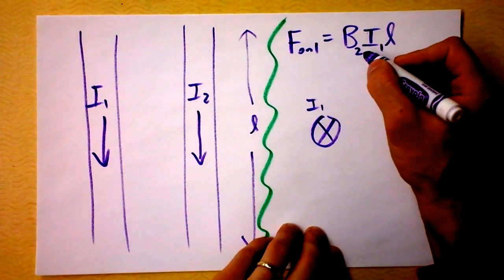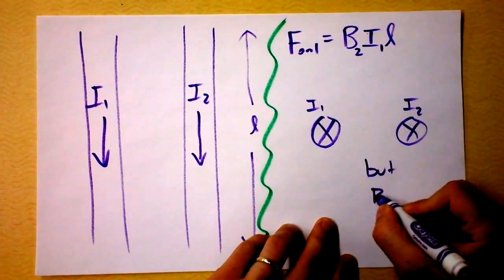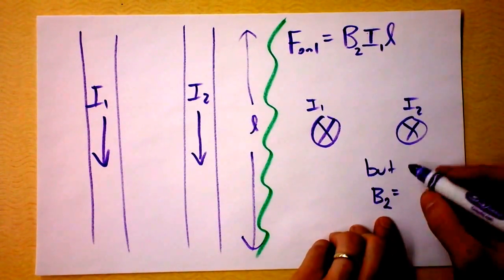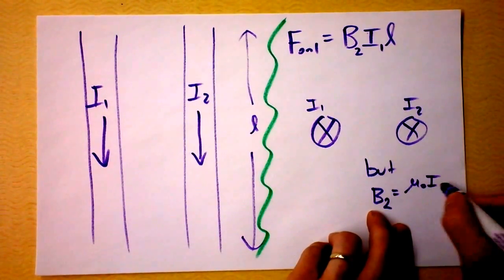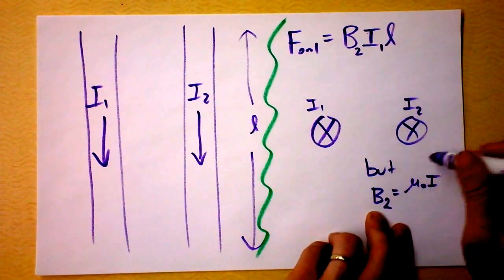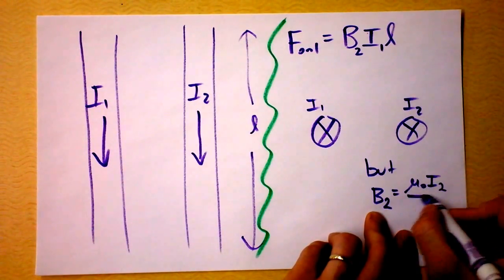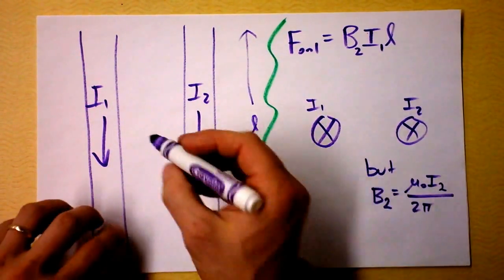But we know the magnetic field caused by wire 2. The magnetic field caused by 2 is equal to, oh, we just did that. It's μ₀ times the current enclosed, like the current of wire 2, the current of wire 2 divided by 2π times how far apart the wires are.